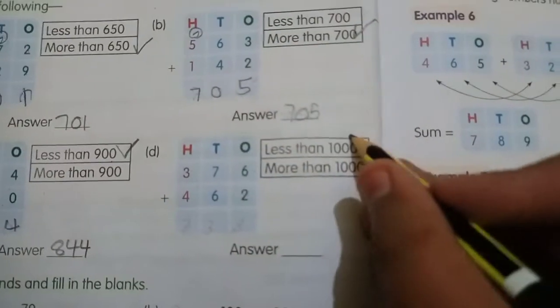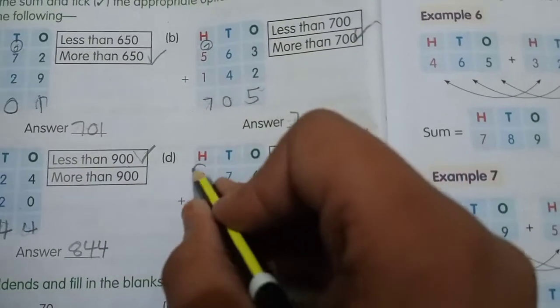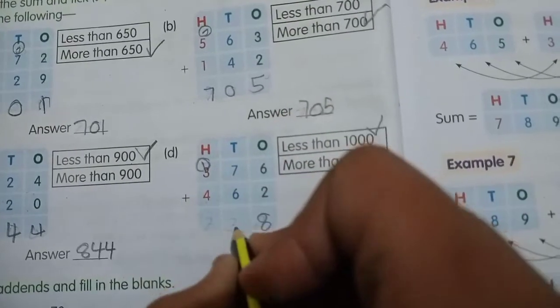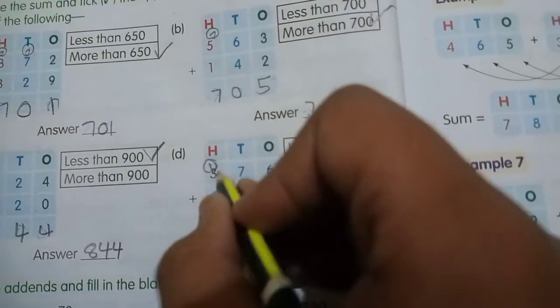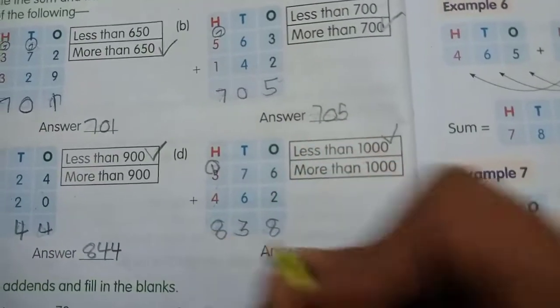Less than 1000, iska predict karunga main. So 6 and 2, 8. 7 and 6. Iska answer aayega, 7 and 6 is 13. 3 and 4, 7. 7 and 1, 8. 838.